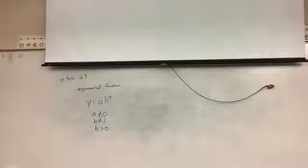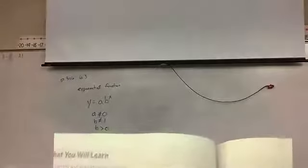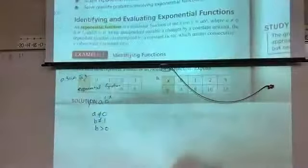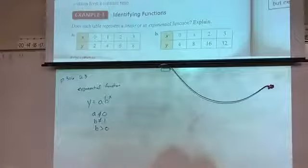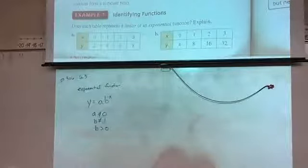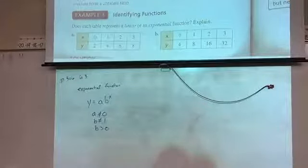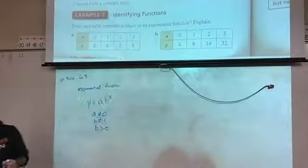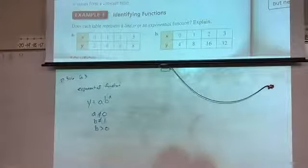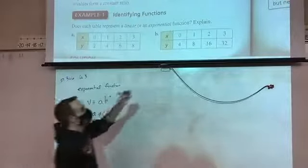In terms of a table, we've done this with linear before — we determined whether something was a linear function or not. We're now going to look at whether something is an exponential function. One of these tables is linear. A is linear. How do I know? Constant rate of change — it adds the same thing for x and adds the same thing for y. That's what made something linear.